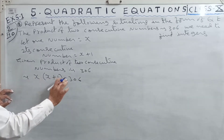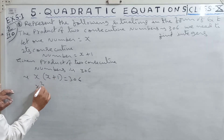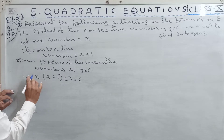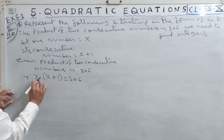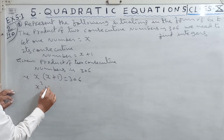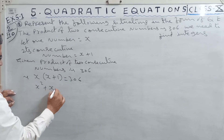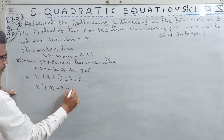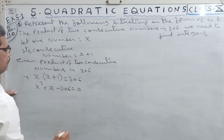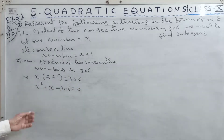Multiplying: x into x gives x squared, plus x into 1 gives x. Bringing 306 to the left side: x squared plus x minus 306 is equal to 0.